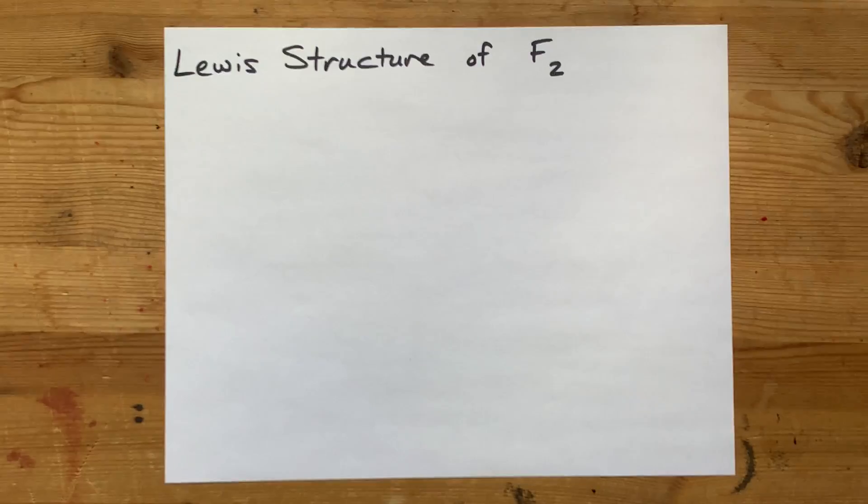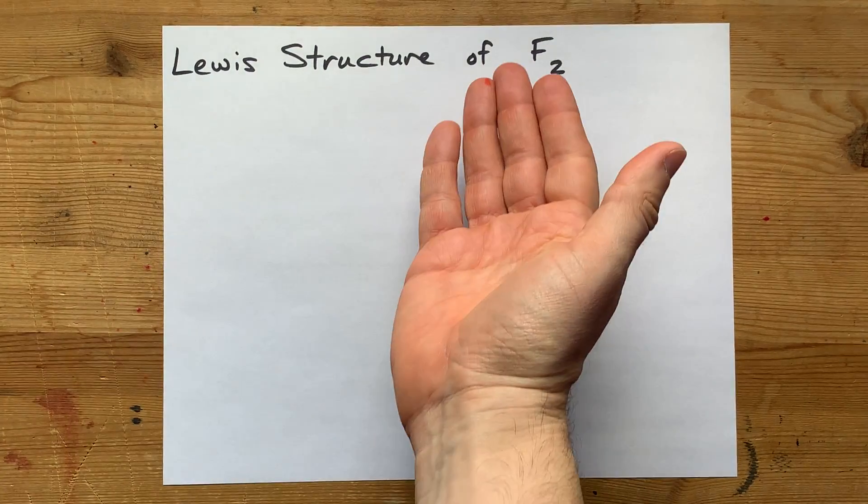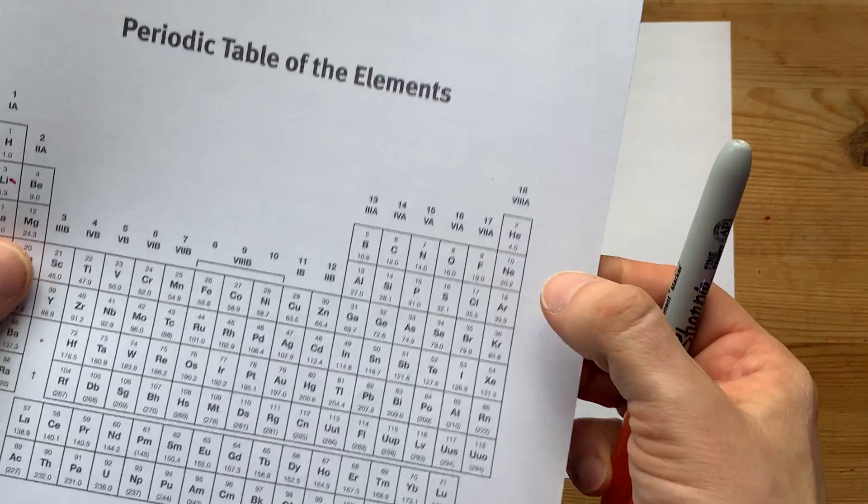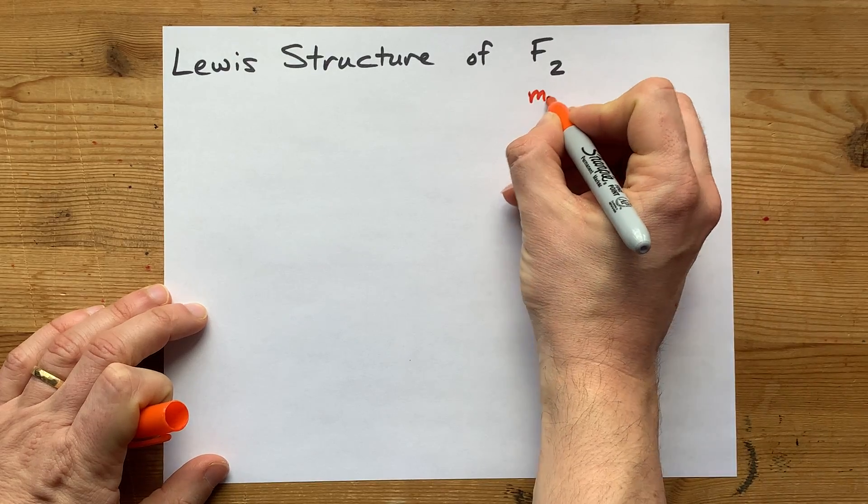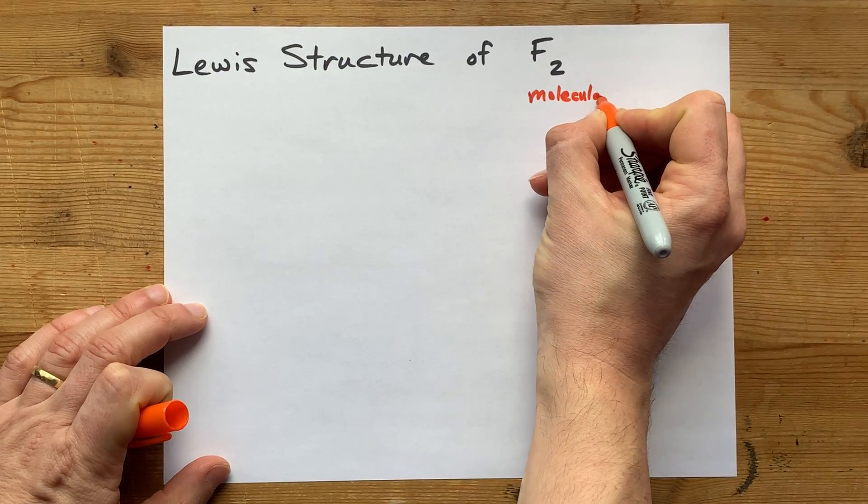We're going to draw the Lewis structure for molecular fluorine, or F2. Now, F is a non-metal, and when non-metals bond together, you get what we call molecular compounds.